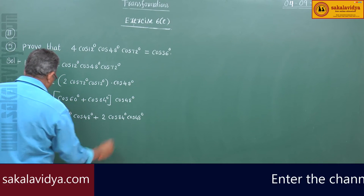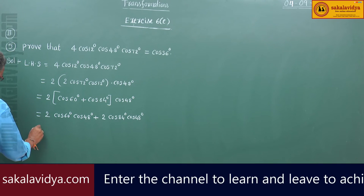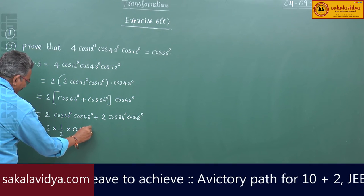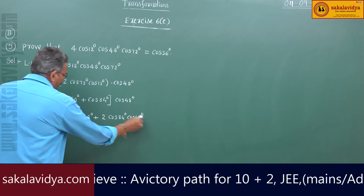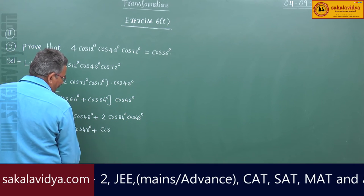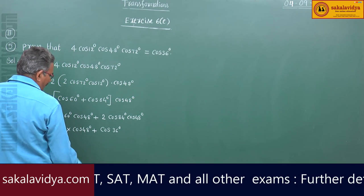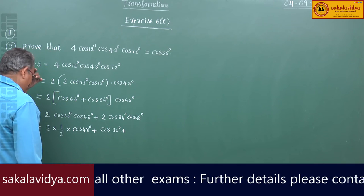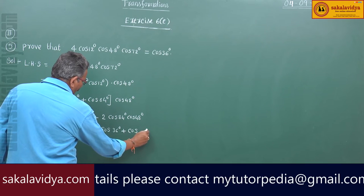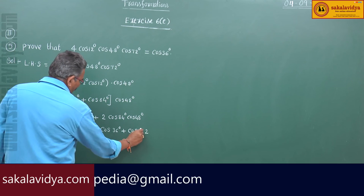Cos60 degrees is 1/2. So 2 into 1/2 into cos48, again applying 2·cosA·cosB: this we can write cos of (A minus B) — 84 minus 48 is 36 — and plus cos of (84 plus 48), which is 132 degrees.